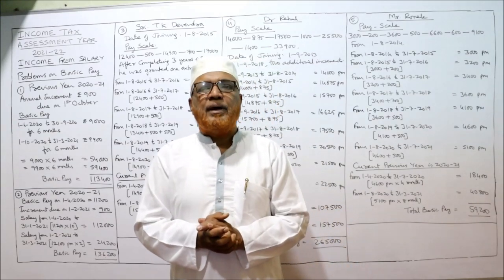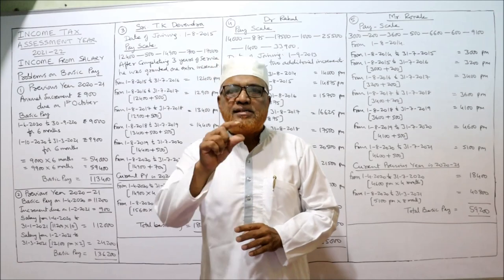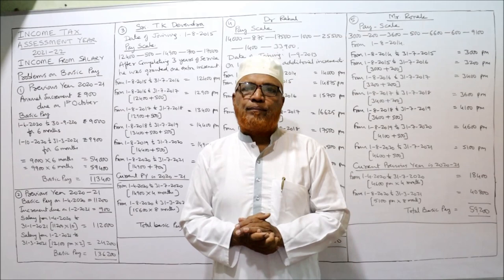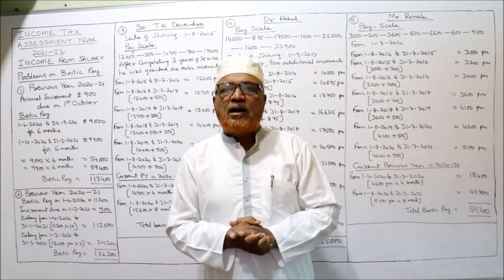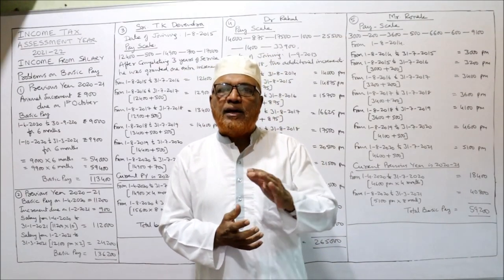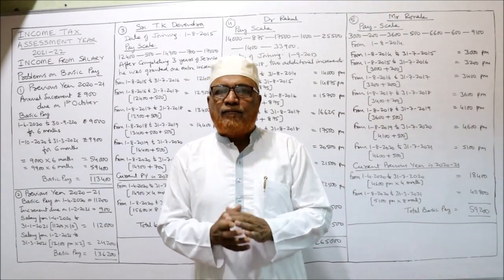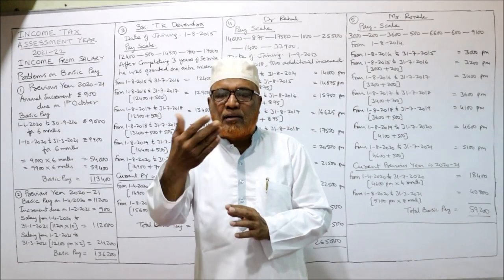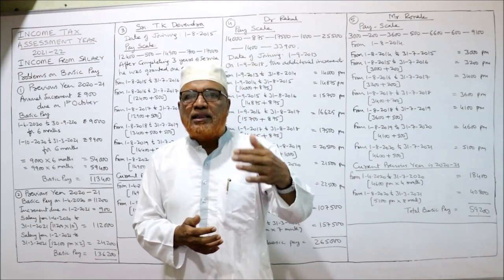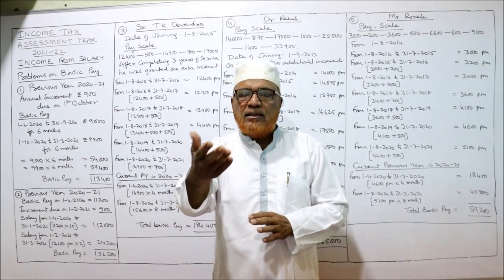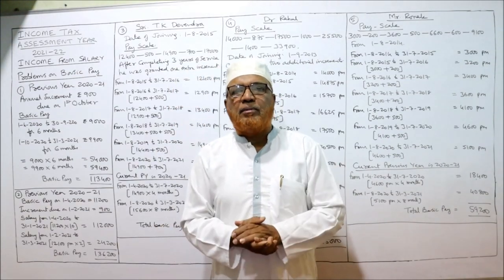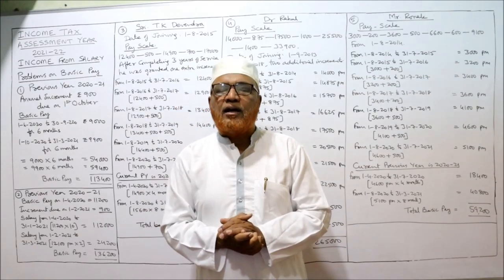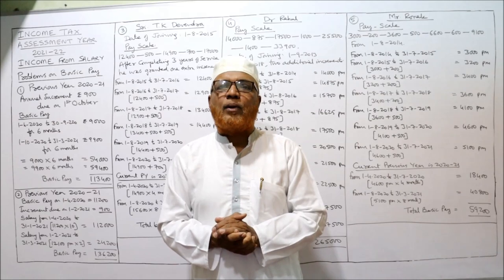Basic pay is the prime salary which the employer gives to the employees. Normally the basic pay will not be constant — there will be an increment in basic pay. For example, the first year basic pay is 10,000; next year it will increase by 200, so the employee gets 10,200 monthly. Then again in the third year another 200 rupees increment, so 10,400. In this graded form, basic pay is paid by the employer to the employee.